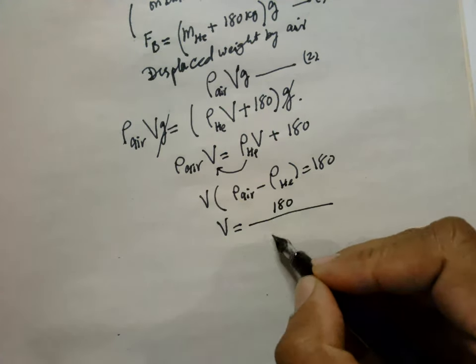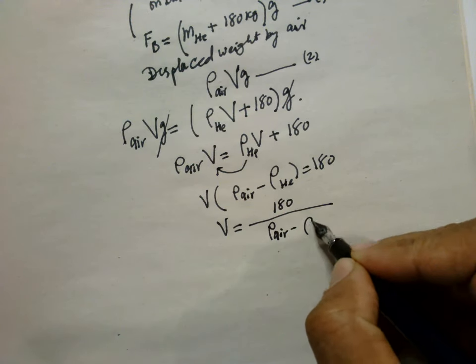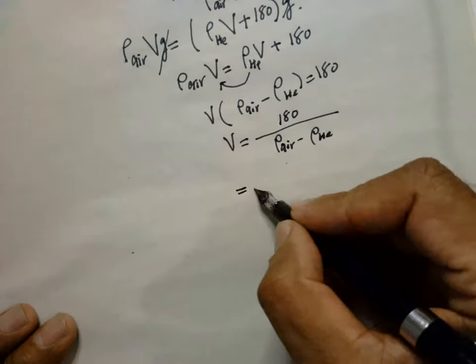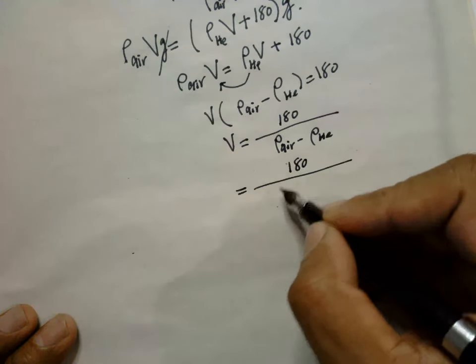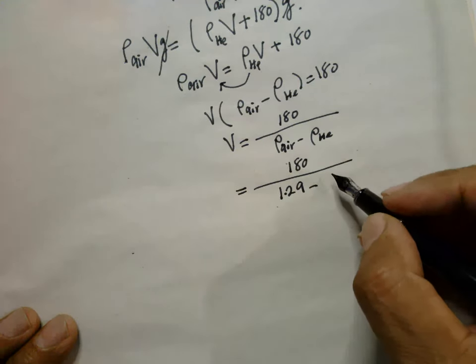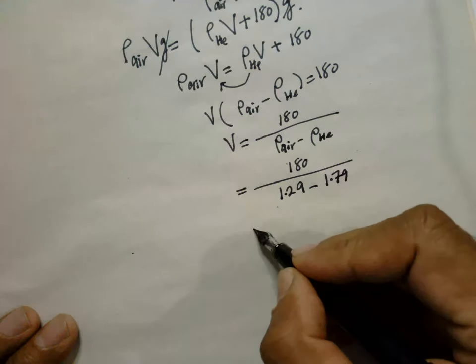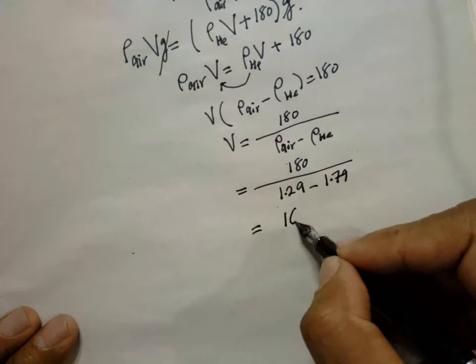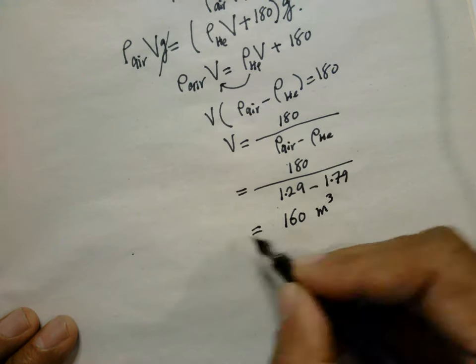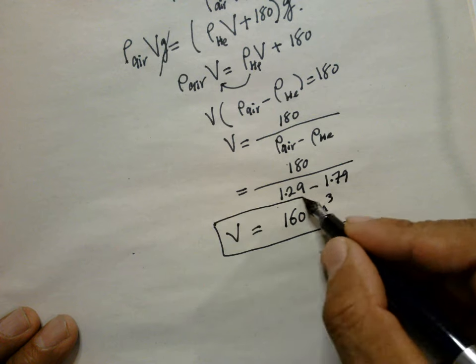This is equal to 180 divided by (rho air minus rho helium). Air is 1.29 and helium is 0.179. If you calculate this one, 160 meter cube, so this is the volume required of helium.